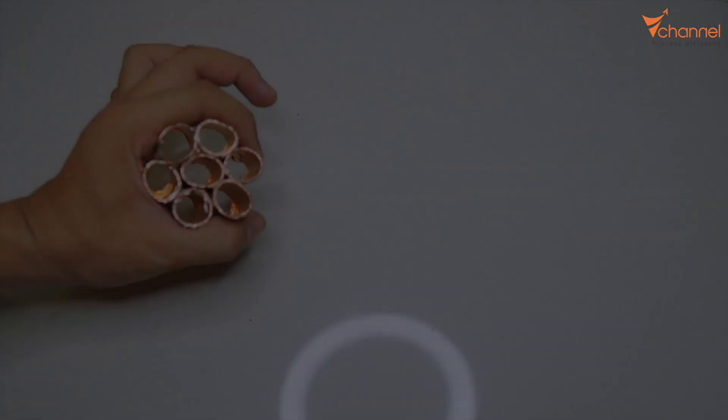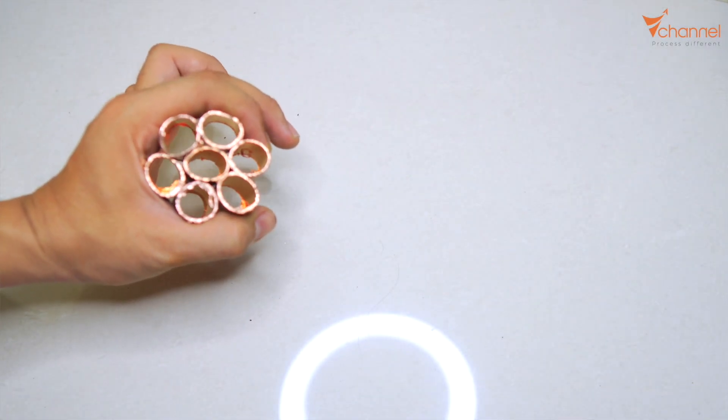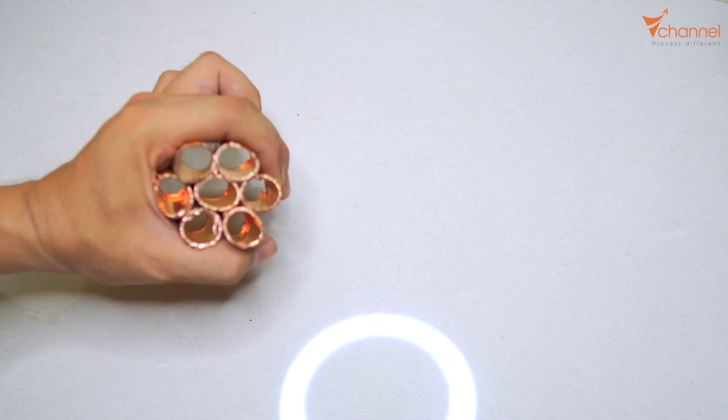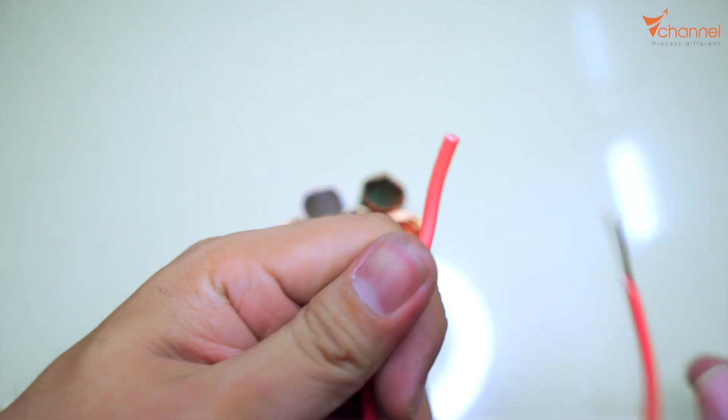After cutting, we have it like this. We will rub all of them. If you have a copper wheel, it's perfect. If not, you can use wire like this.